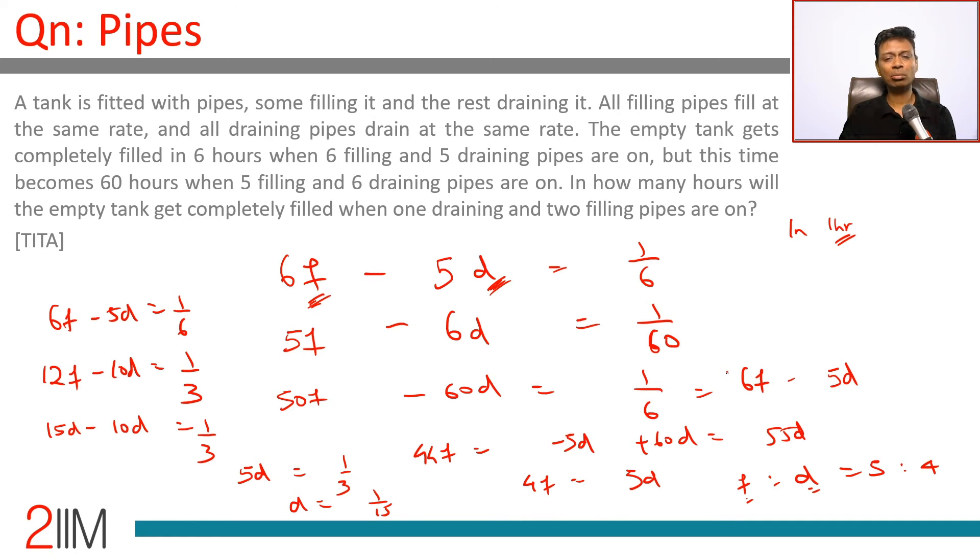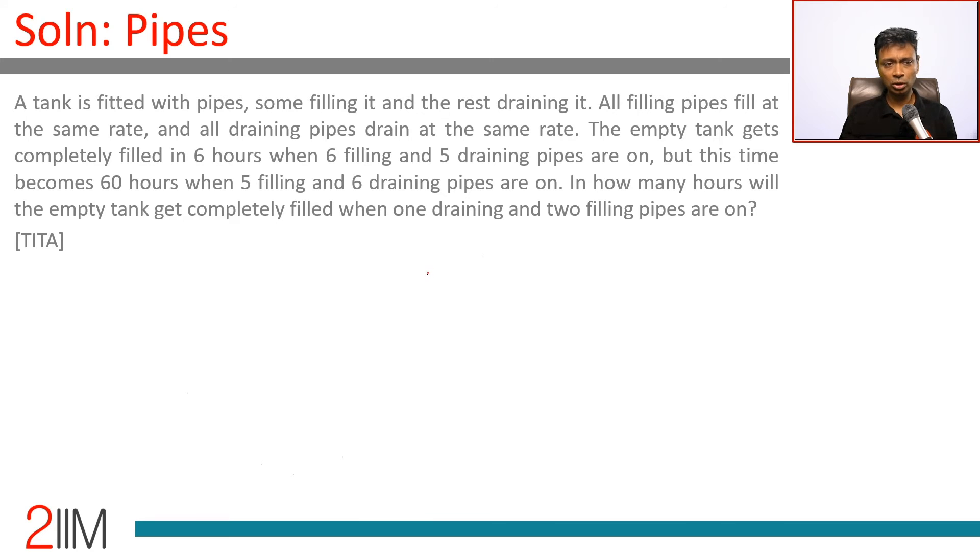How many hours will the empty tank get completely filled when 1 drain pipe and 2 filling pipes are on? 2 filling pipes: 2 times 1/12, and 1 drain pipe: minus 1/15. This is 1/6 minus 1/15. LCM is 30: 5/30 minus 2/30 which is 3/30 or 1/10.